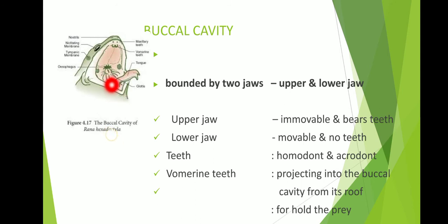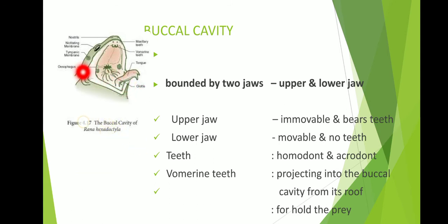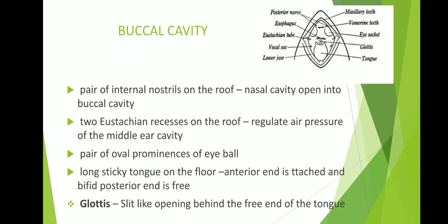Behind the free end of the tongue, we can see a slit-like opening labeled as the glottis, which leads to the lungs.